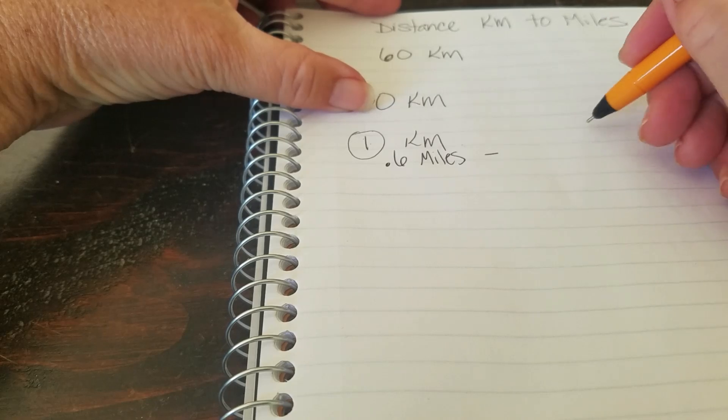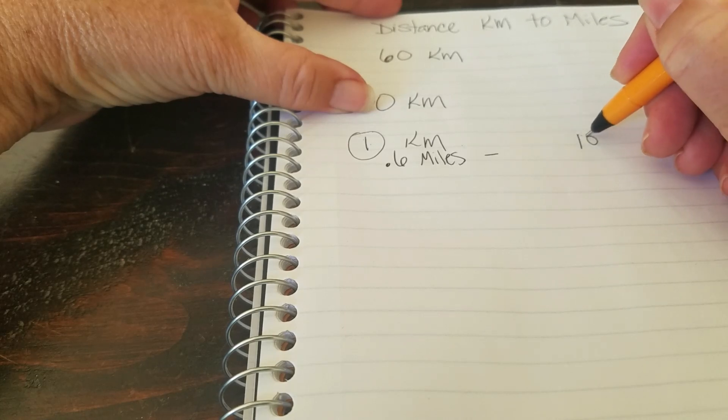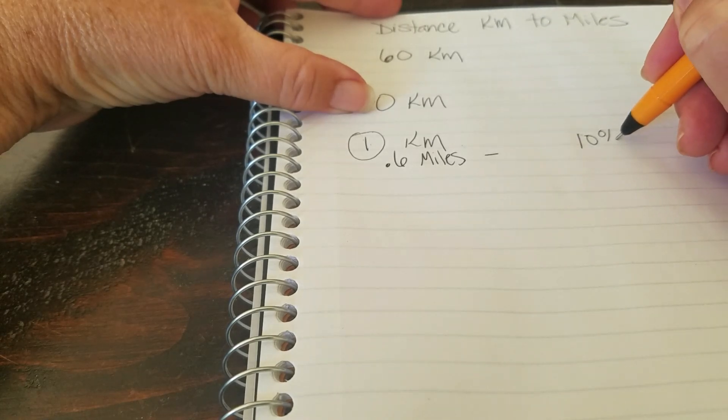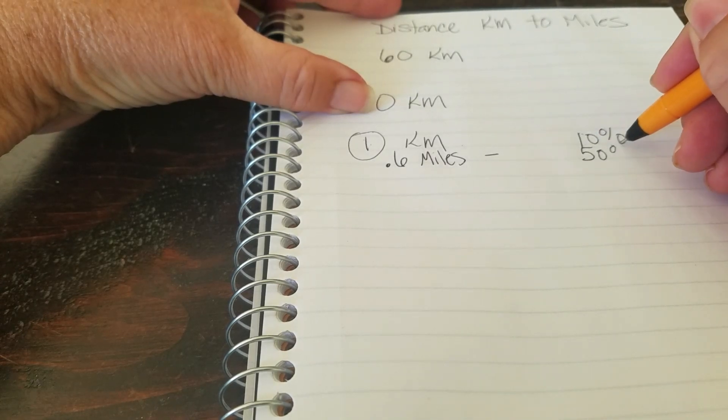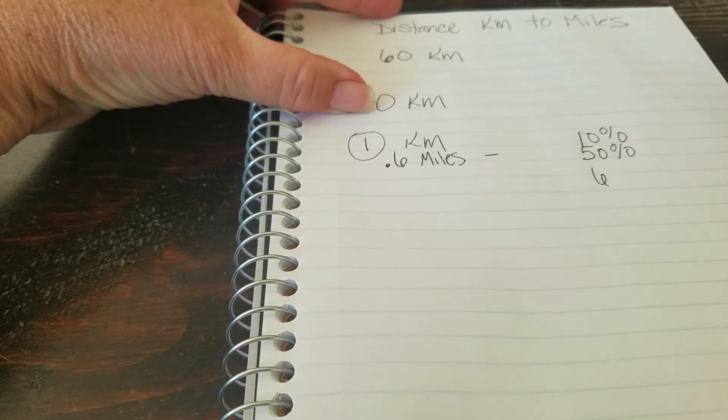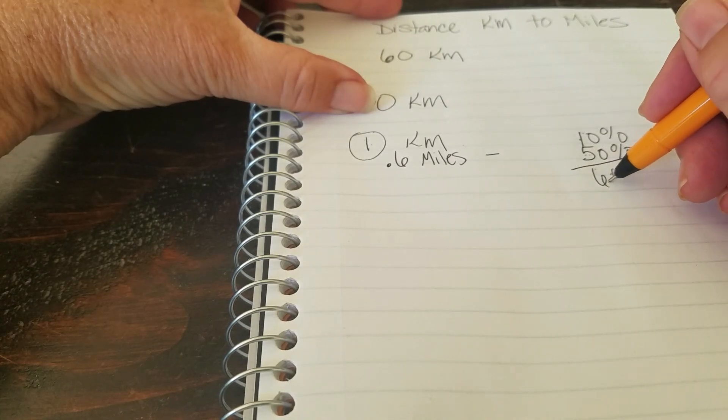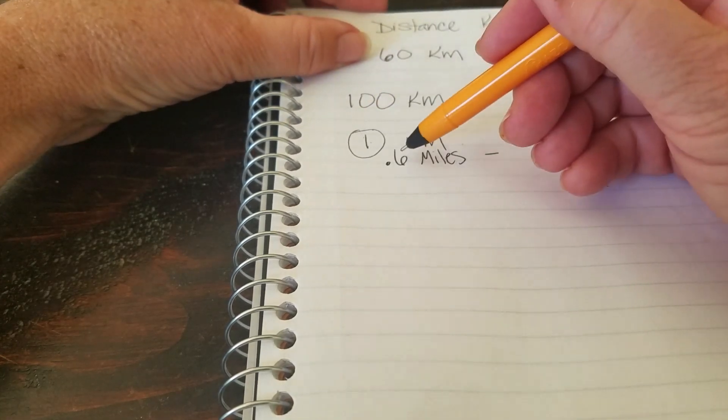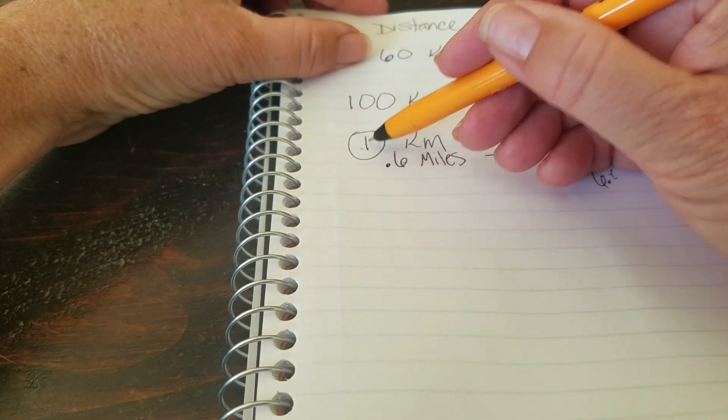What I do is I will look at the kilometers and take the number and find 10% of that number, and I will find 50% of that number. That would make 60%. So if you wanted to know how much a kilometer was, you would multiply that by 0.6.